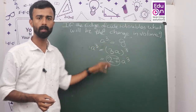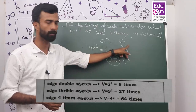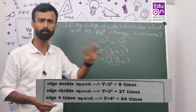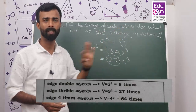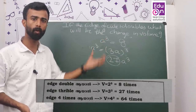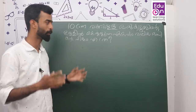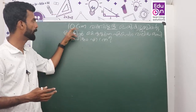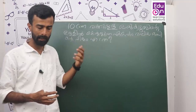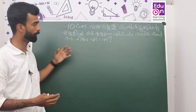So that's how we learn — if the edge is multiplied by 3, the volume becomes 27a³ (twenty-seven times). So that's how we learn these patterns. Now I'll go to the next question: how many cubes can be placed inside a cubical room of edge 10 cm?